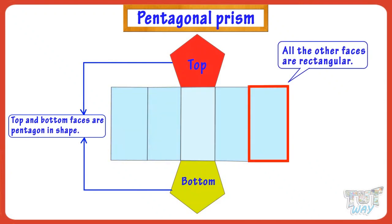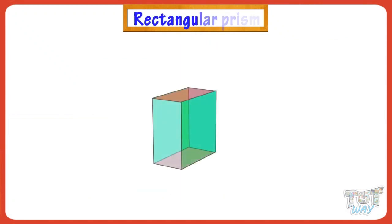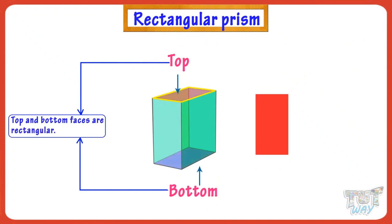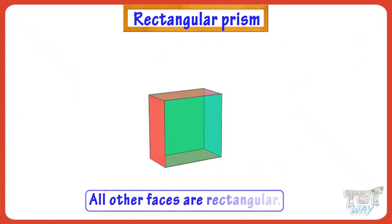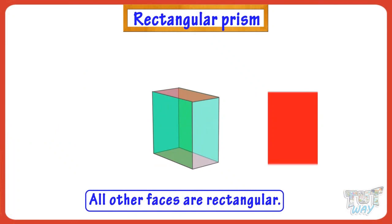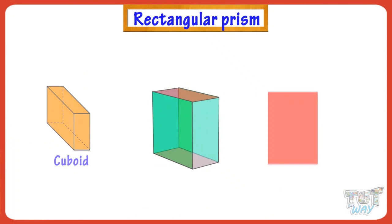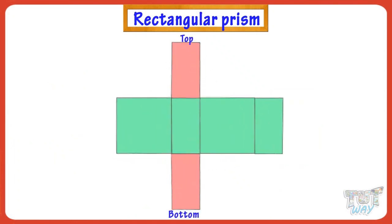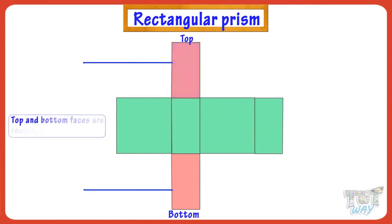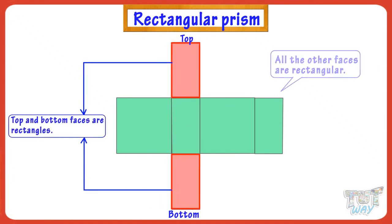Now let's see another 3D shape. Here we have a rectangular prism that has rectangular top and bottom faces. This is the net of a rectangular prism, where we can clearly see all the faces. Its top and bottom faces are rectangles, and all the other faces are rectangular too.